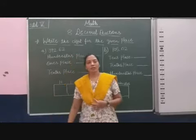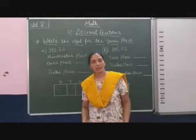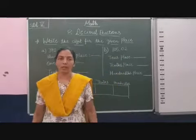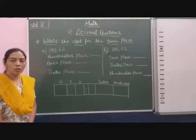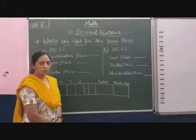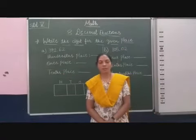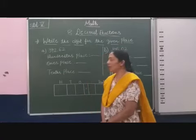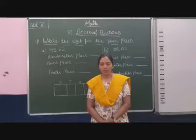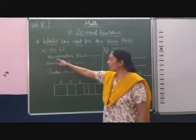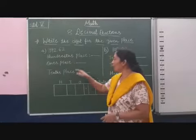Students, here a decimal number is given and we have to explain the expansion form — we have to fill it out in words. The number given is 392.62. On this basis we can understand that 392 is the whole number and 62 hundredths. The question asks us to fill in the blank for the hundredths place.